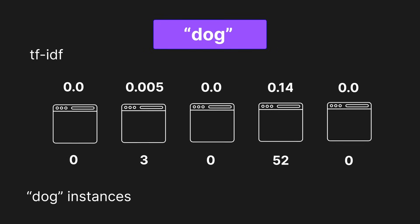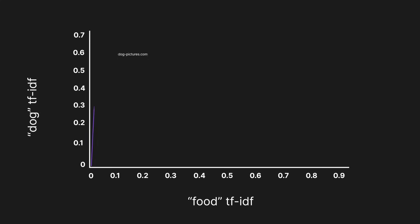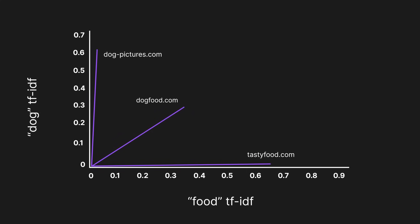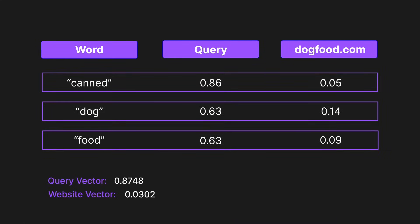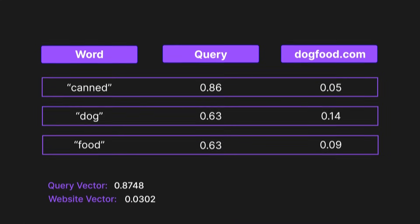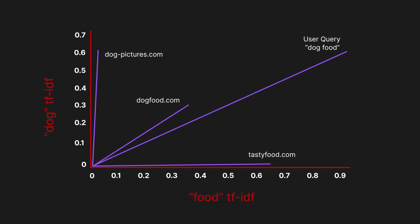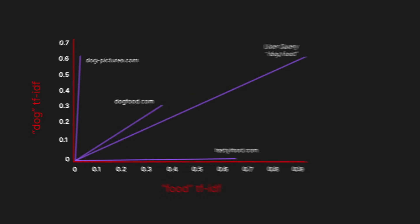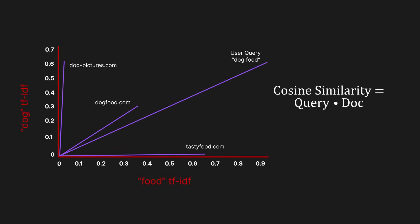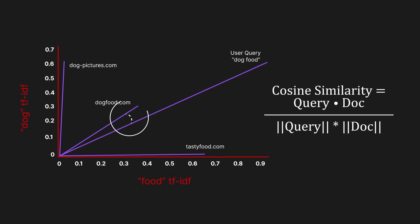On their own, these TF-IDF numbers only represent a single word. So how do we match these scores to a query with multiple words? Well, some genius figured out that we can represent the TF-IDF scores in vector space — specifically in Euclidean vector space by converting them to what's known as the Euclidean norm. This now allows every word to represent its own axis, and then we can use simple vector math to calculate the similarity between the query vector and the document vector.